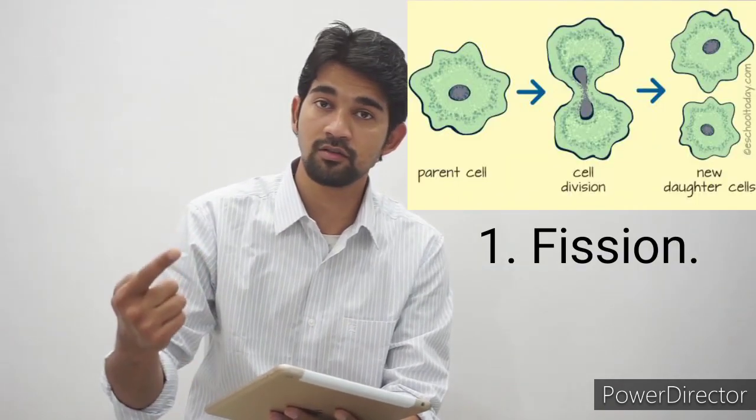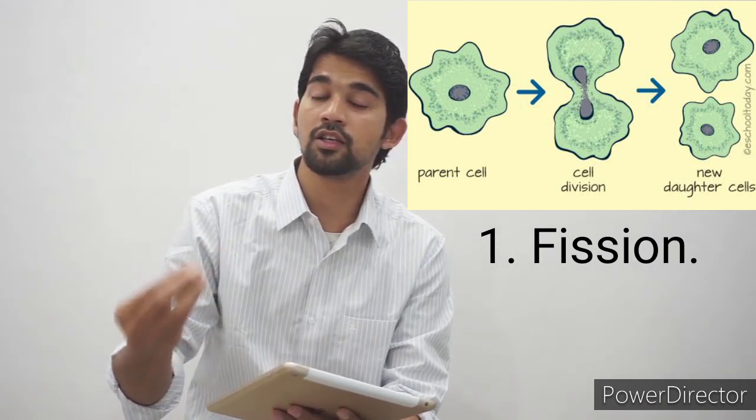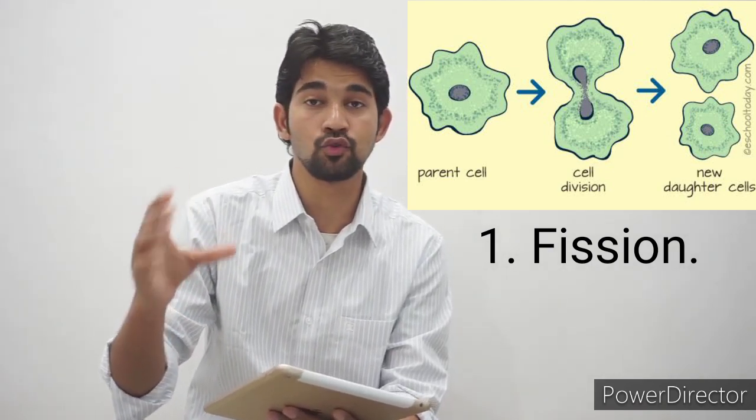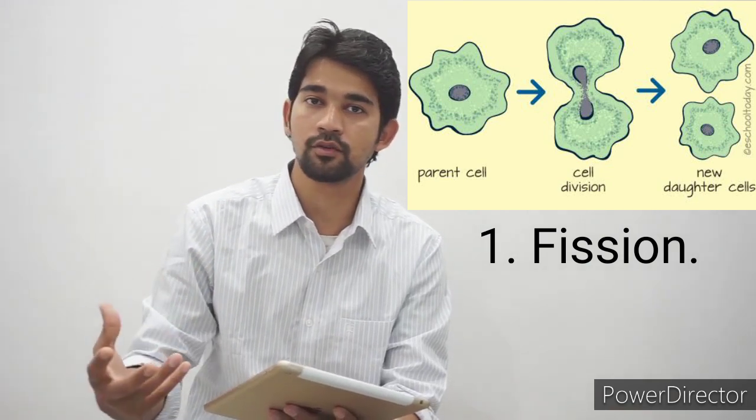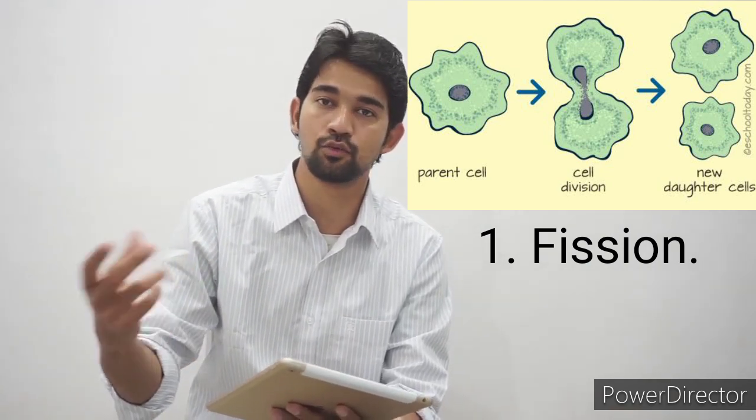Asexual reproduction is mostly a characteristic feature of lower organisms such as protozoans, sponges, and certain other groups. It may take place by many different methods and does not require the fusion of male and female gametes. Asexual reproduction can happen through fission, where an individual splits into two or more new individuals, like a cell dividing into two.